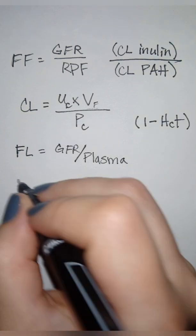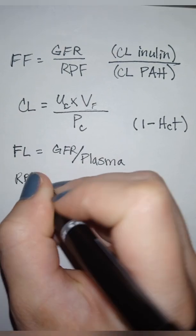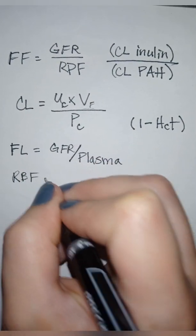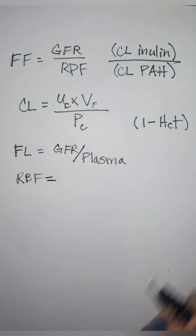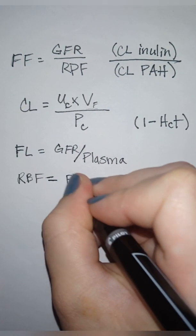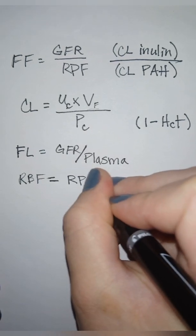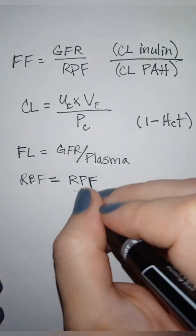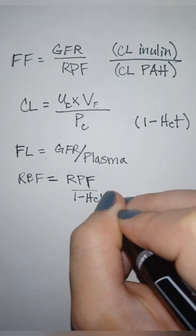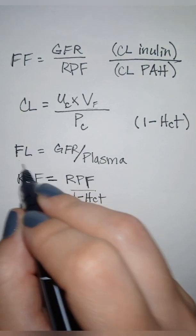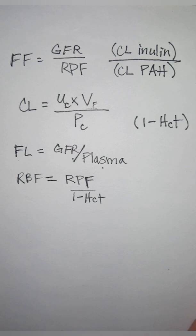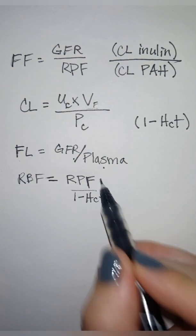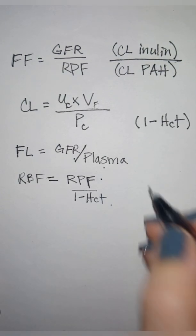Now renal blood flow is another one they might throw in. That's going to be also information that you know. That's going to be renal plasma flow over one minus hematocrit or plasma. So filtered load, GFR over plasma. Renal blood flow, renal plasma flow over plasma. You've got all of that information with just this little bit.